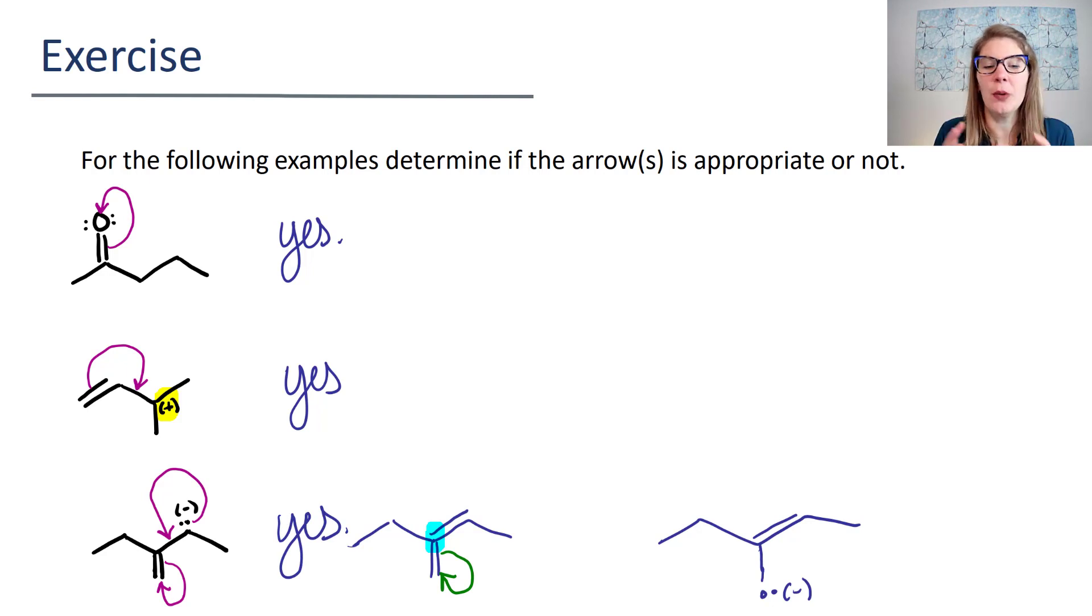And notice how now we've seen kind of both examples of you start your arrow tail at a pair of electrons. You can start your arrow tail at either a bond pair of electrons, like I just circled on that first one, or you can start your arrow tail at a pair of electrons that's a lone pair. You can point your arrow head to an atom and that says put lone pair here. Or you can take your arrow head and point it to an already existing sigma bond and that says make double bond here.